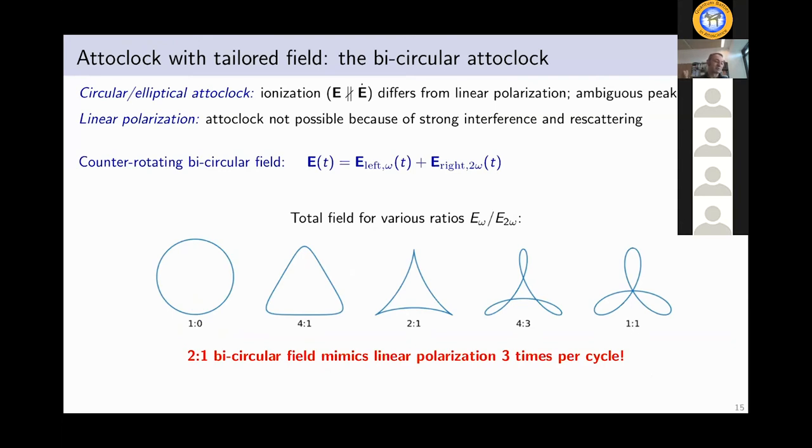And one could think about doing the attoclock with linear polarization, but it's just not possible because in linear polarization, you have a lot of effects. You have intra-cycle, sub-cycle interference, you have re-scattering, you have Coulomb focusing, holography, all that into one distribution. So it's very complicated and you cannot analyze it like an attoclock. But there's a trick, we can use a bicircular field. So in particular, we can use a superposition of two counter-rotating fields with frequency omega and 2 omega.